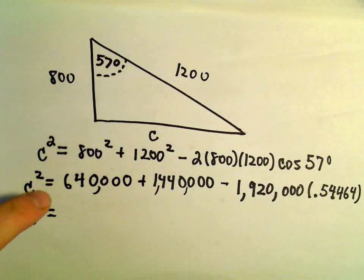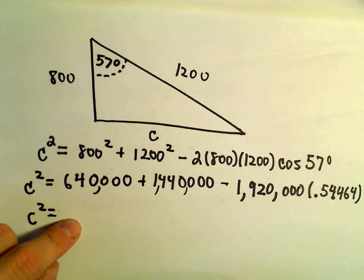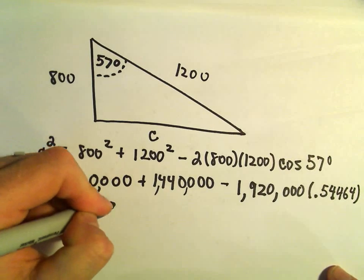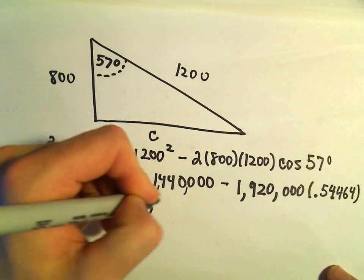Now it's just doing the arithmetic. So 640,000 plus 1,440,000, that's 2,080,000.